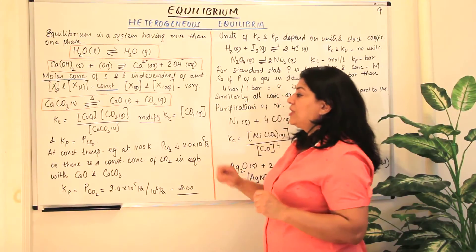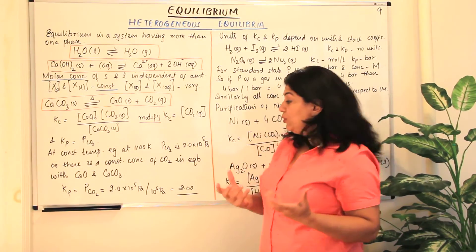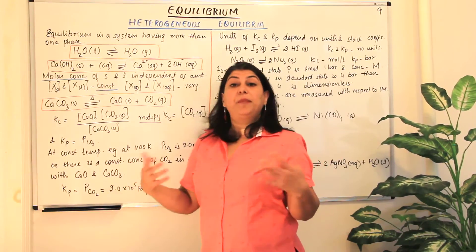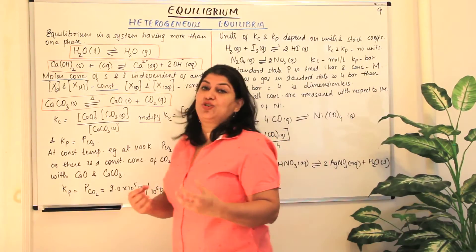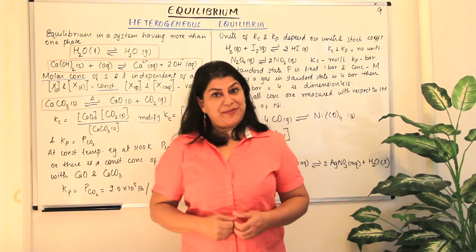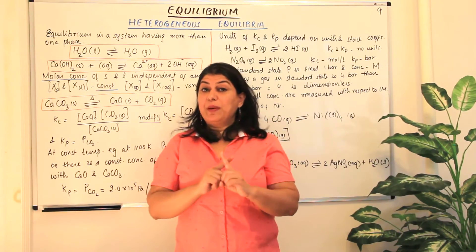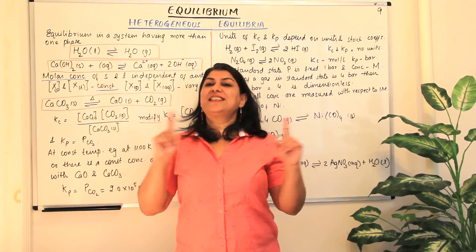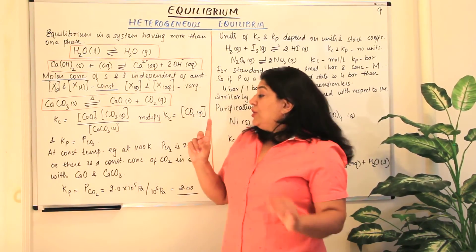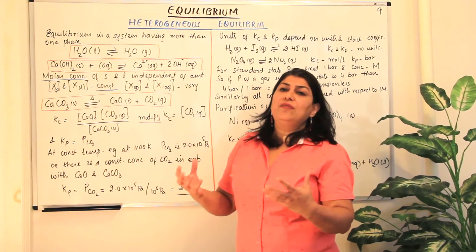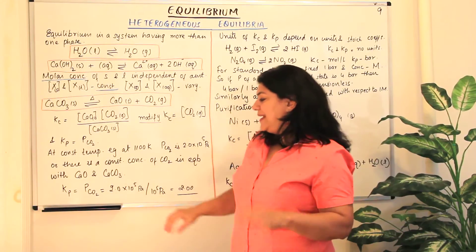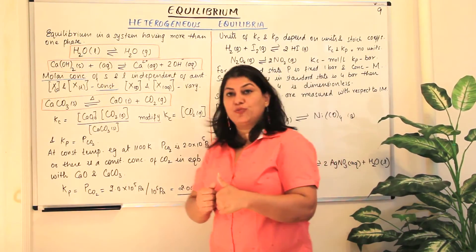Now, when we use Kc and Kp they would have units — if pressure is reported in Pascals, the answer is in Pascals. But we prefer Kc and Kp not to have units — we want them to be dimensionless quantities. This is possible when reactants and products are expressed in their standard states. In the standard state, the pressure of any substance is 1 bar, and 1 bar equals 10⁵ Pascals.